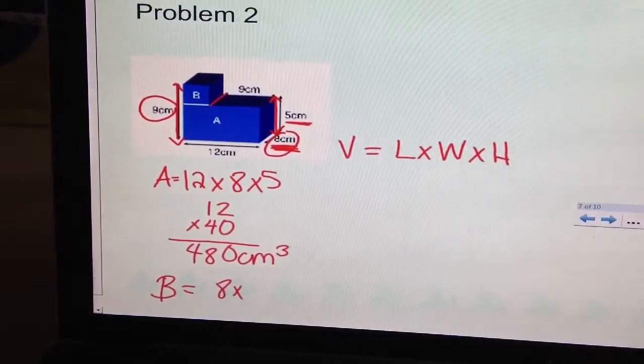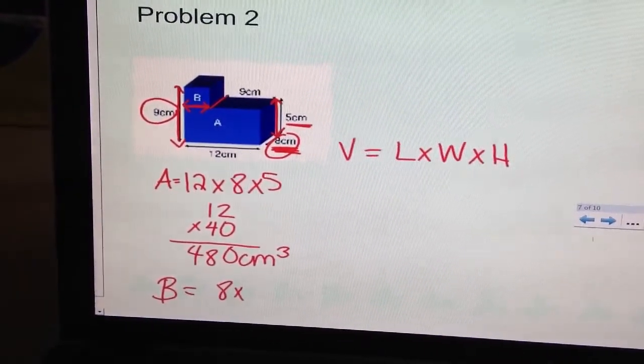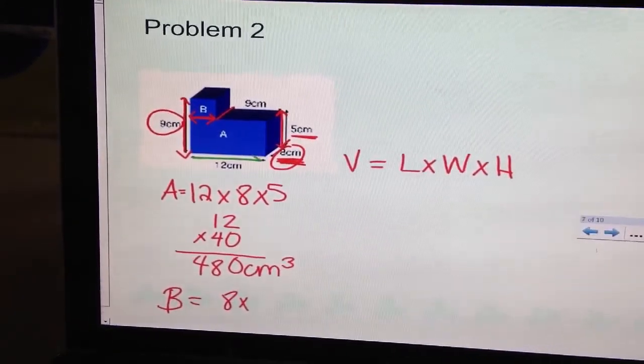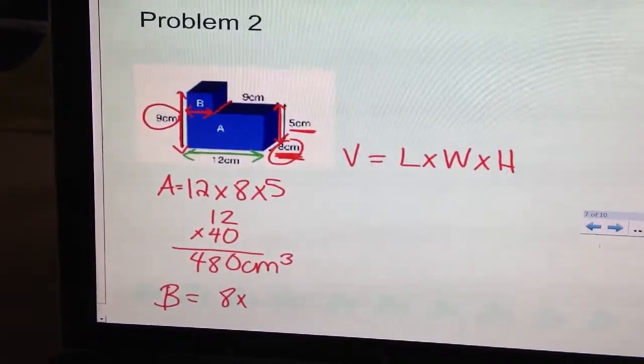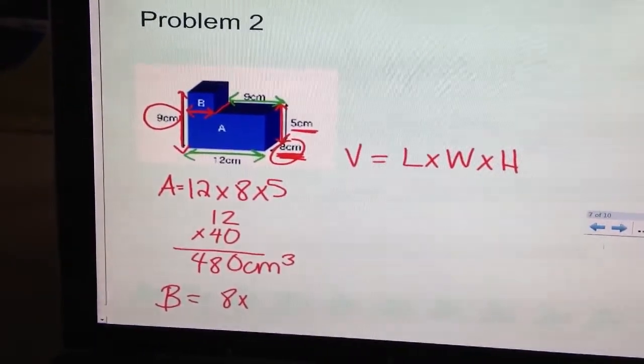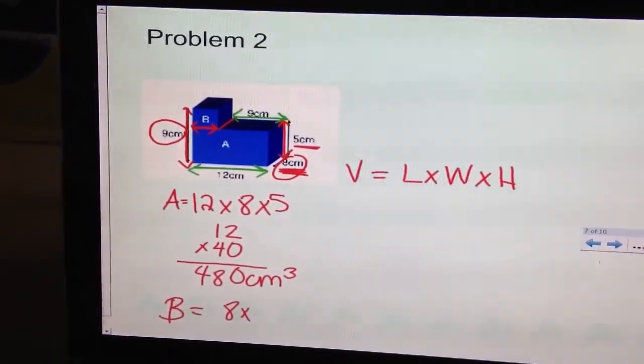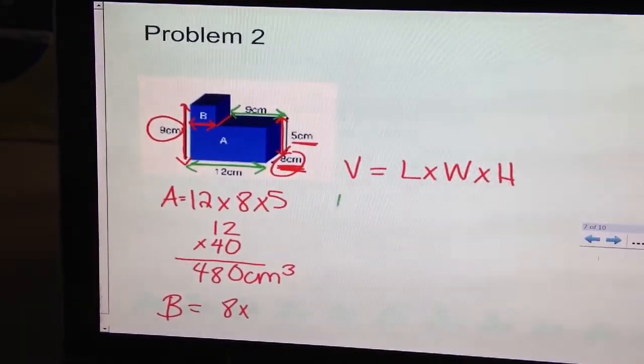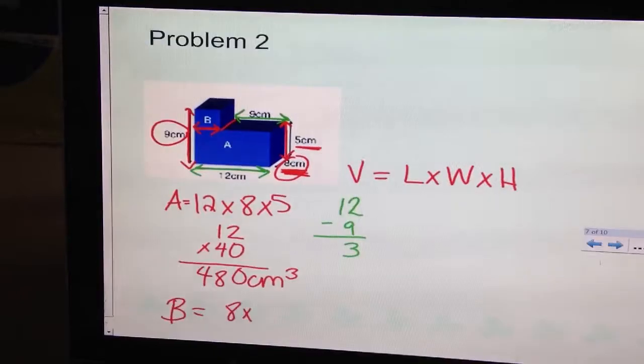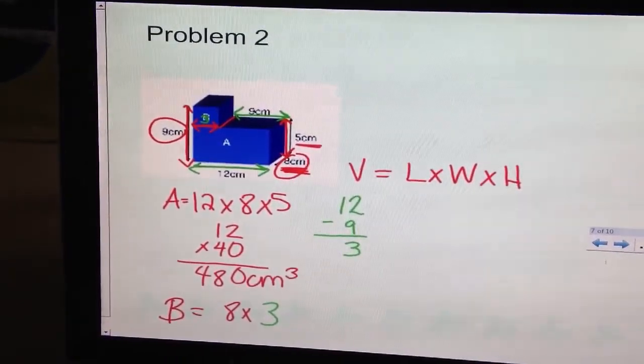However, I can't tell how long it is. It's not labeled right there. But I know the bottom portion of this is 12 centimeters. And I know this portion, that's not covered by block B, is 9 centimeters. So I can figure it out by subtracting. So 12 minus 9 is going to give me 3. And that will tell me the length of that side, that missing side.